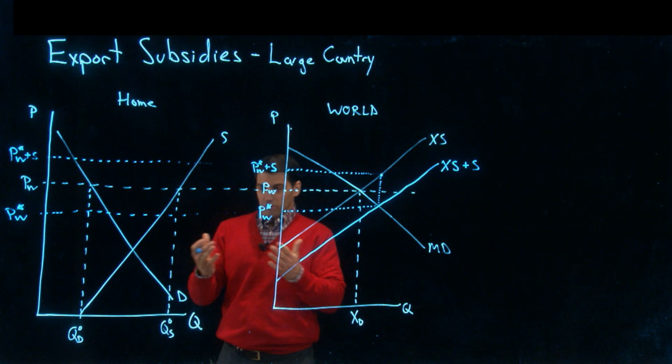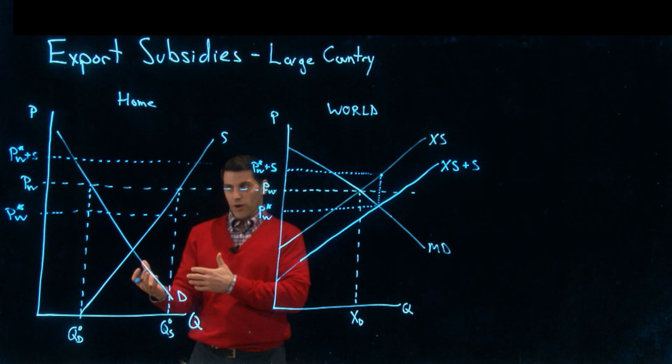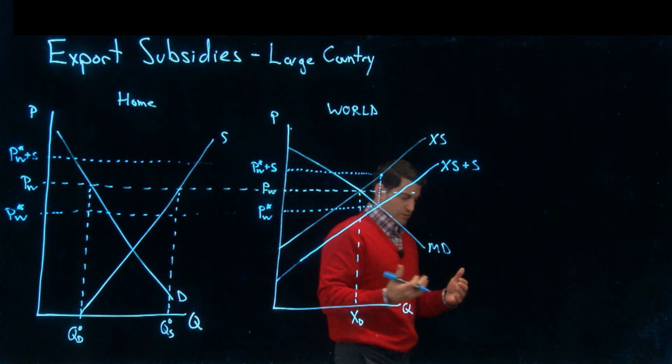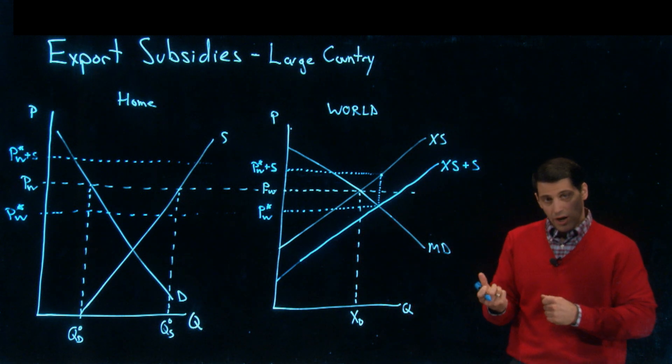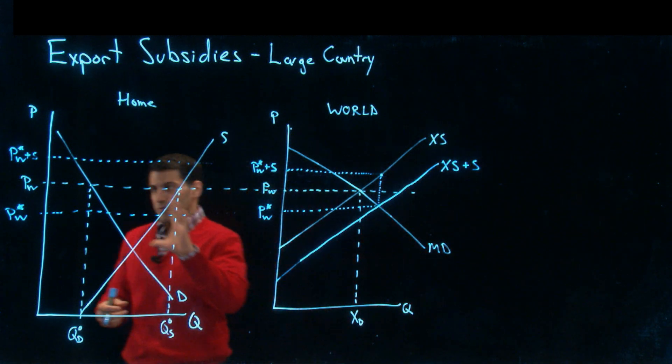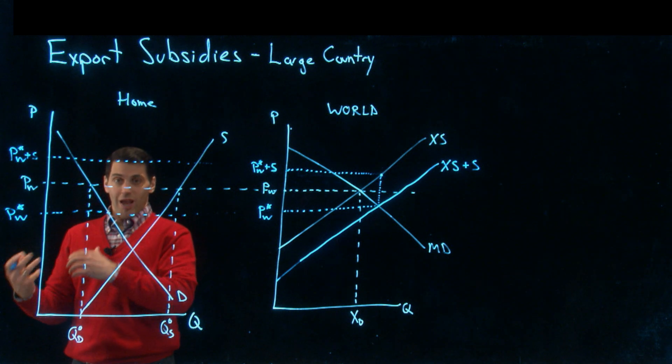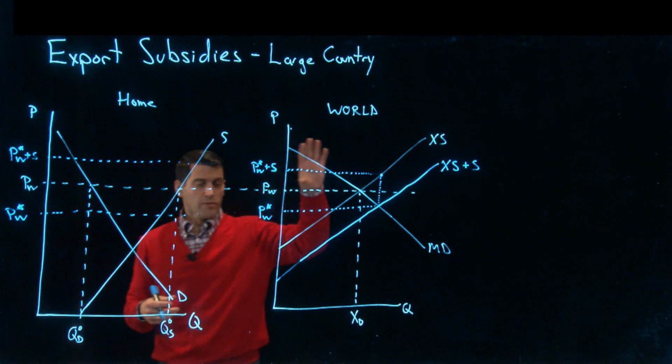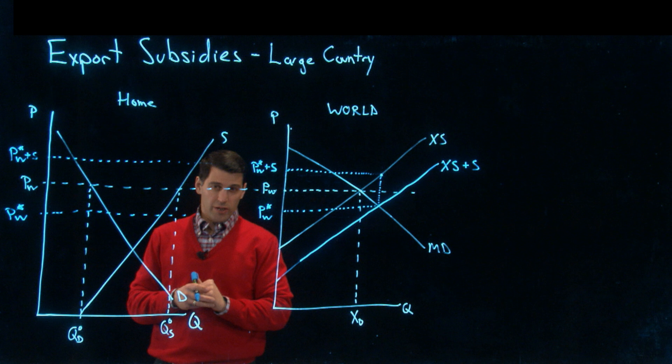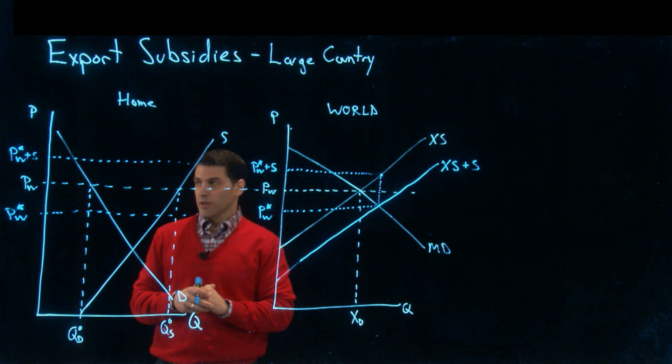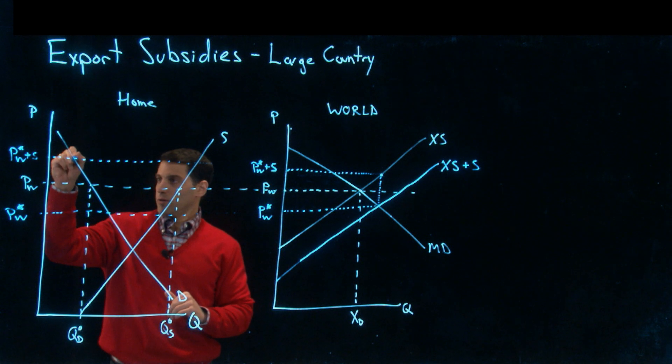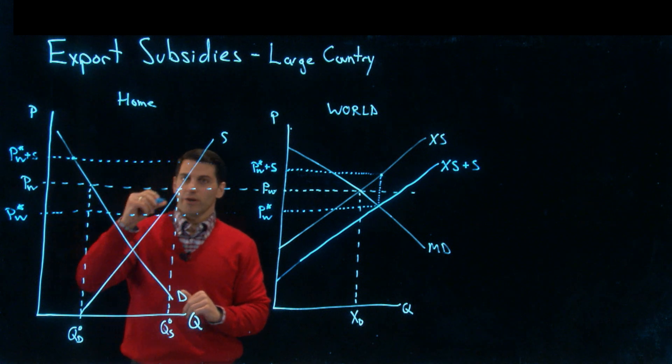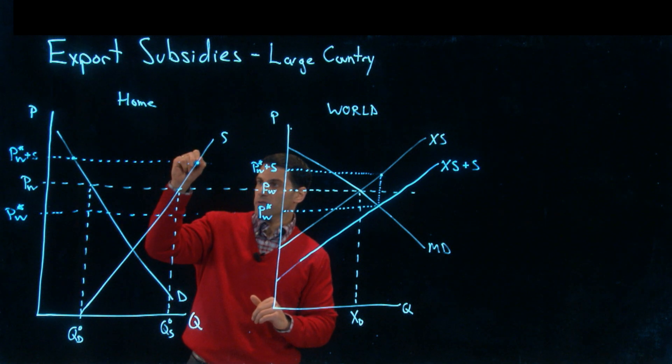You want to imagine a scenario where the home country government is also going to put a tariff in place on imports to ensure that the domestic price matches what the home country producers are getting when they export to the world market. So the domestic price is going to go up to PW star plus S here as well.